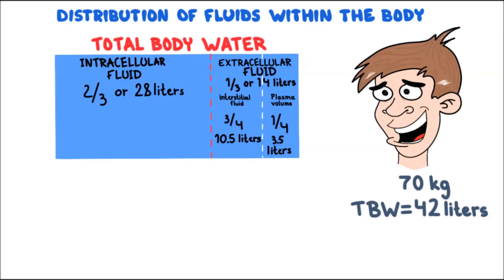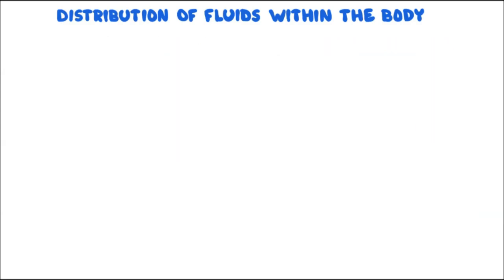This raises a very interesting question. The intracellular compartment contains more fluid compared with the extracellular compartment — a 28 to 14 ratio, or two to one. So why is fluid not equally distributed within these two compartments? And this brings us to the effects of osmosis.